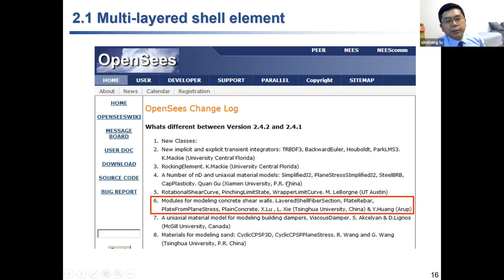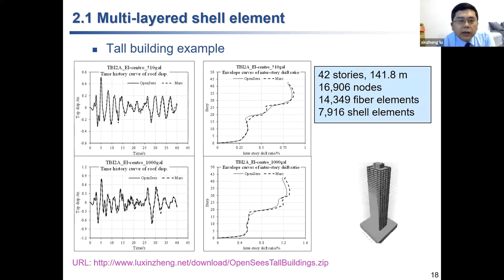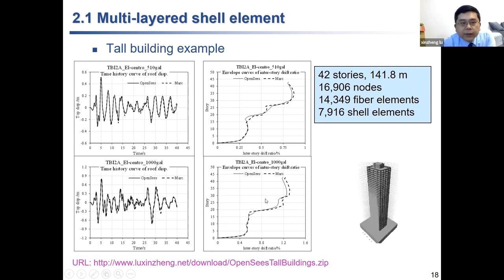This model has already been embedded in OpenSees for about six or seven years. For simple shear walls, the multi-layer shear element has similar simulation behavior to fiber elements, but for short walls or coupled walls, the shear element performs better than existing models — and all these models can be downloaded from the website. Together with the fiber element, we can build tall building models. A typical tall building example is available to download, and the calculation results agree quite well with commercial software.